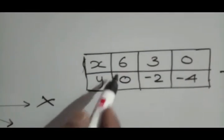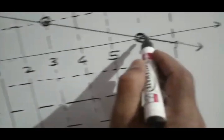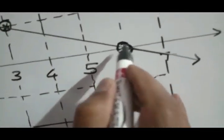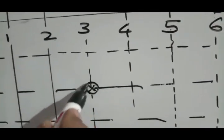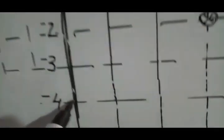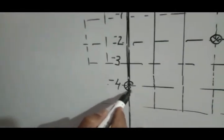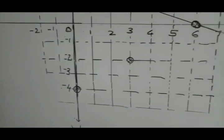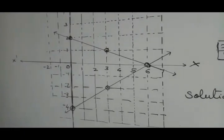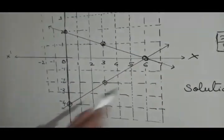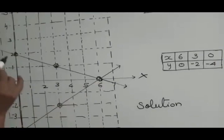Now plot the points for the second equation. The point 6 comma 0 is already marked. Next, 3 comma minus 2, which is plotted here. Third point is 0 comma minus 4. All three points are now plotted. Join all three points with the help of a scale.